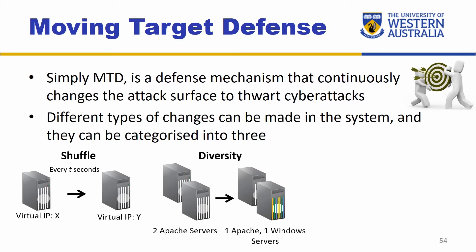The next one is diversity. We have a homogeneous network with the same hosts, but now we're going to add some diversity by varying different types of servers that we have. So we have two Apache servers — now we replace one with a Windows server. By doing this, we're going to change the exposure of the servers. Windows will have different vulnerabilities compared to Apache, so if the attacker was targeting one of them, they might have to change the attack scenario in order to compromise both.